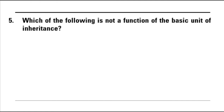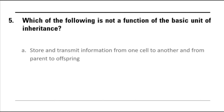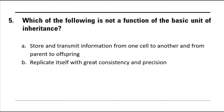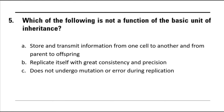Question number 5: Which of the following is not a function of the basic unit of inheritance? Letter A: store and transmit information from one cell to another and from parent to offspring. Letter B: replicate itself with great consistency and precision. Letter C: does not undergo mutation or error during replication. Letter D: both A and B. And letter E: both B and C.